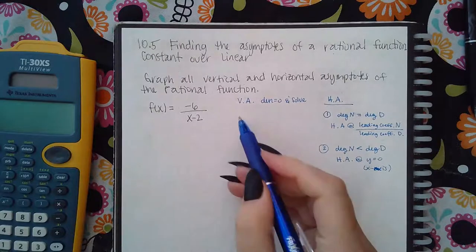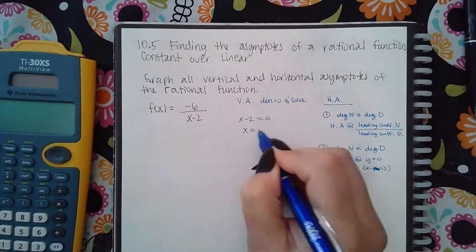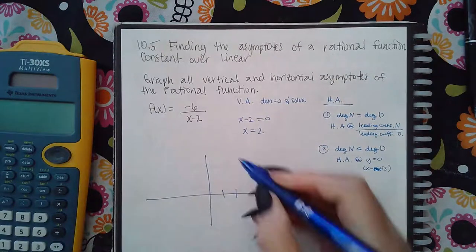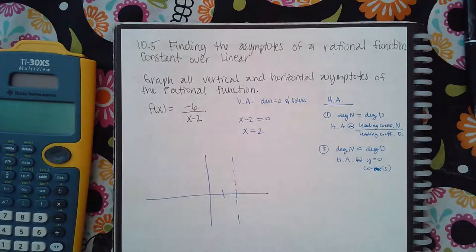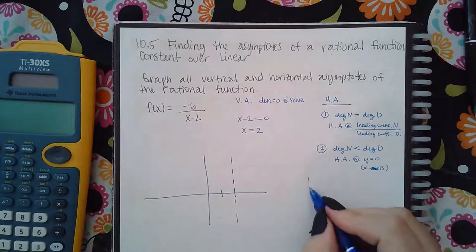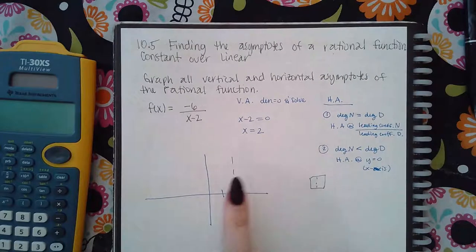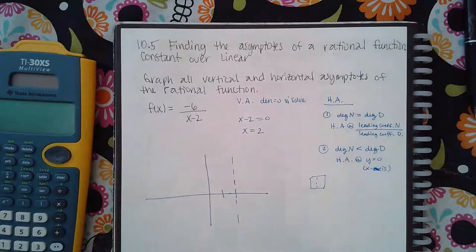So for my vertical asymptote, I'm going to take this x minus two and equal it to zero, I get x equal to two. So then if I graph that, that's here, which means I will draw a dotted line at two. In the computer, you're going to select the button that looks like a vertical line, click it, and place it right on the x value two.